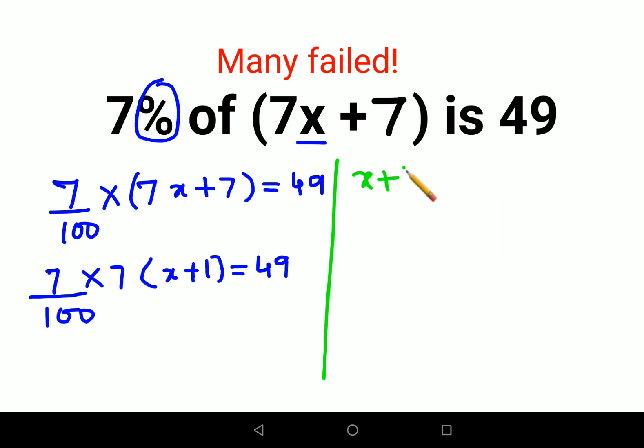So we have x plus 1 on this side and then we have 49 into 100, because here the 100 was getting divided. So when you shift it on the other side it will get multiplied, and 7 into 7 is also 49. So we are seeing things are cancelling.